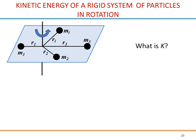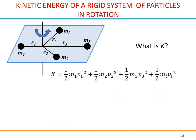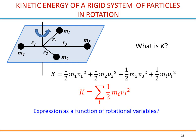Let's have a look at the kinetic energy of rotation. We take a system of particles: M1, M2, M3, and so on — we have MI located at a distance RI. What is K? From linear motion you know the kinetic energy is half of M v squared, and you take the sum for each mass. So you can write this as the sum of one half MI VI squared.